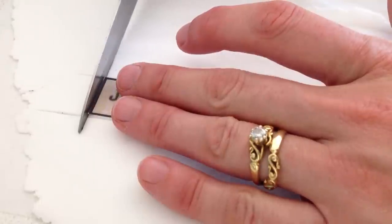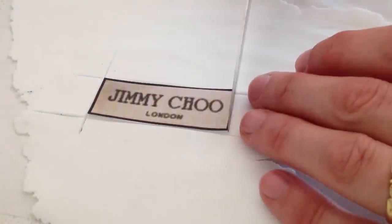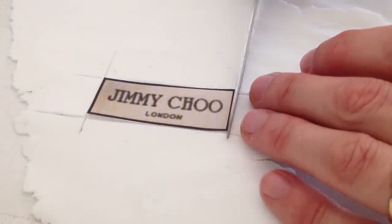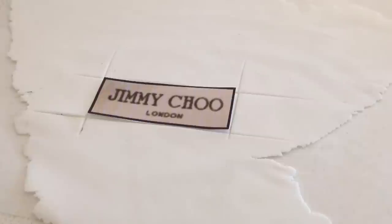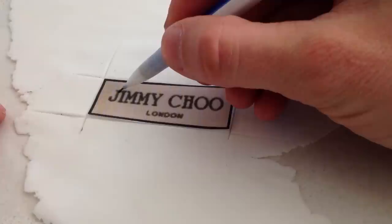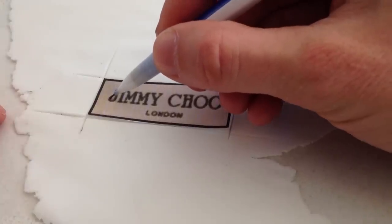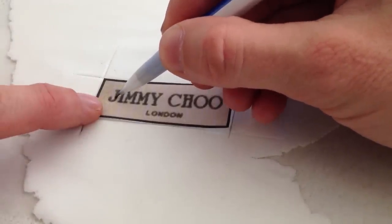Next to make our label, roll out some white fondant really thinly and put your template over the top and cut out the rectangle shape. Next take a sharp pencil and trace over the letters of the logo, pressing reasonably firmly.